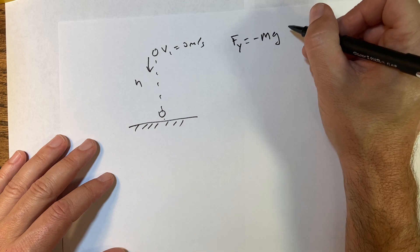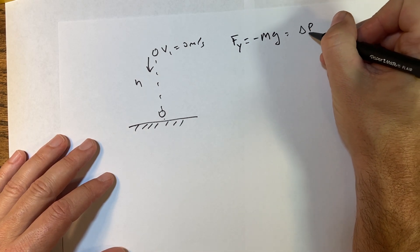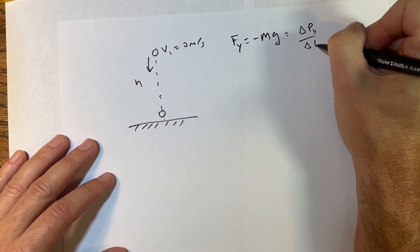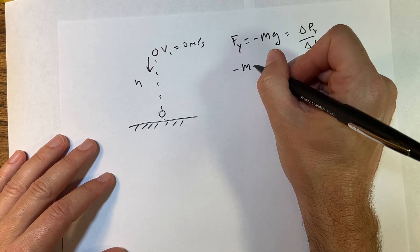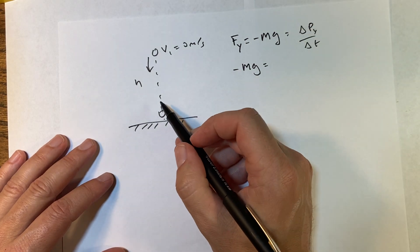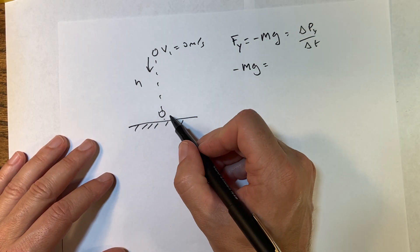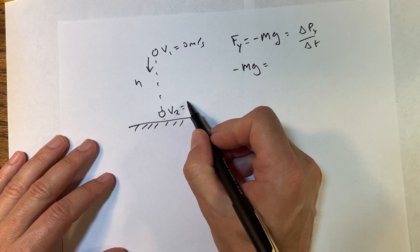I've already broken this into a scalar problem, one-dimensional scalar problem, because I know it's only one-dimensional. And that's going to be delta p y over delta t, so I get negative mg equals—and I want to find out, let's say, how fast is it going down here? v2 equals—that's what I'm trying to find. So this is going to be negative mg.